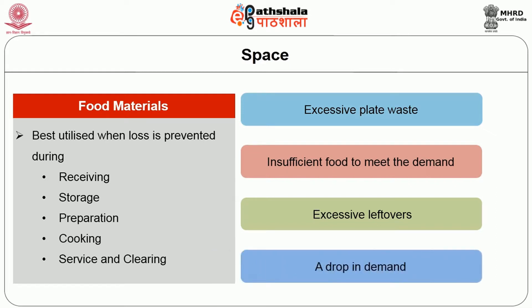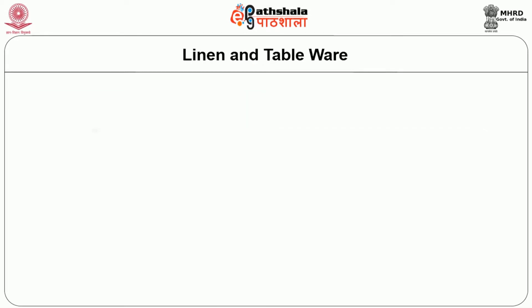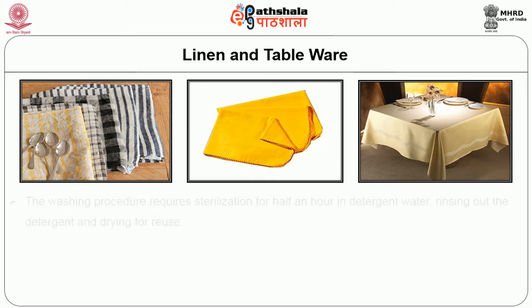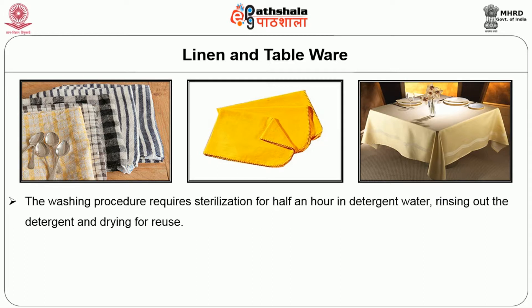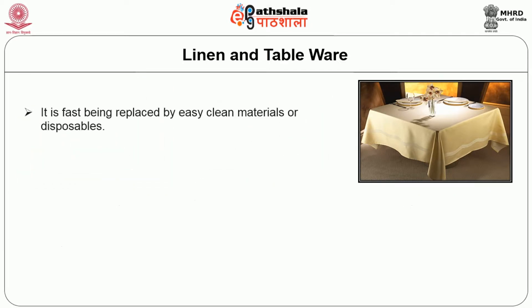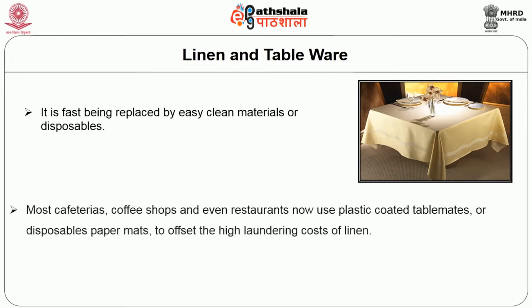Linen and tableware are very important in management. Linen includes kitchen cloths, dusters, and table linen. The washing procedure requires sterilization for half an hour in detergent water, rinsing out the detergent, and drying for reuse. These linens should be changed every day. The most efficient way to utilize them is to give two dusters and a kitchen cloth to every staff member working in the kitchen and dining area, so that they are responsible for their items. Use of table linen is fast being replaced by easy-clean materials or disposables. Most cafeterias, coffee shops, and even restaurants now use plastic-coated table mats or disposable papers and mats to offset the high laundering cost of linen.